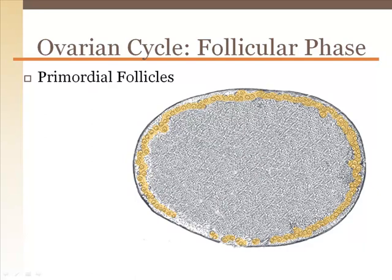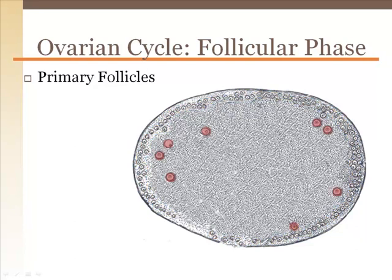The development of the follicles begins with the primordial follicles located at the perimeter of the ovary. These follicles have been there since before birth. They are an ovum or egg surrounded by a single layer of squamous cells. Follicle stimulating hormone from the pituitary gland stimulates the development of a few of these primordial follicles. Primary follicles emerge as a few primordial follicles move inward and form cuboidal cells surrounding the ovum. Estrogen, specifically estradiol, levels are increasing and facilitating follicular development.